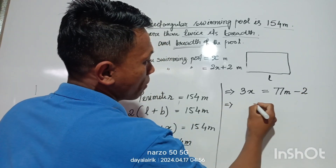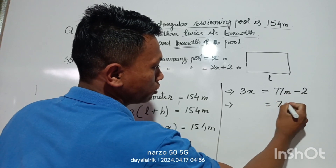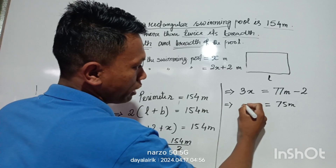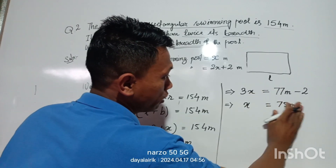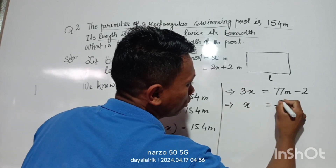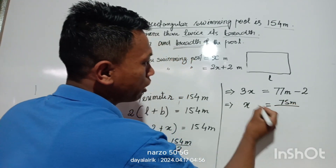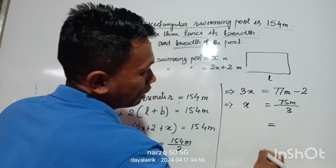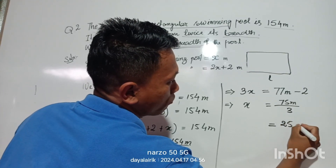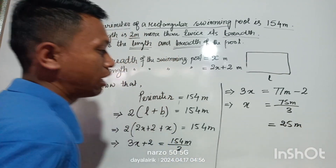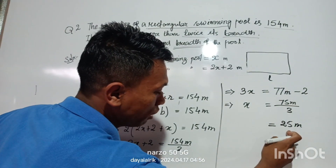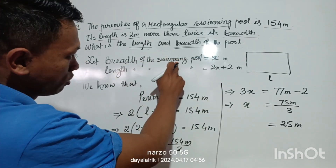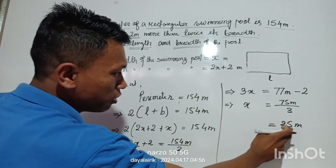Now we want to find x. We have 75 meters divided by 3, which equals 25 meters. So the breadth of the swimming pool is 25 meters.